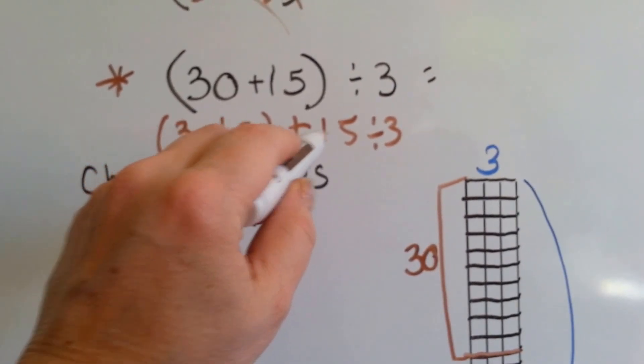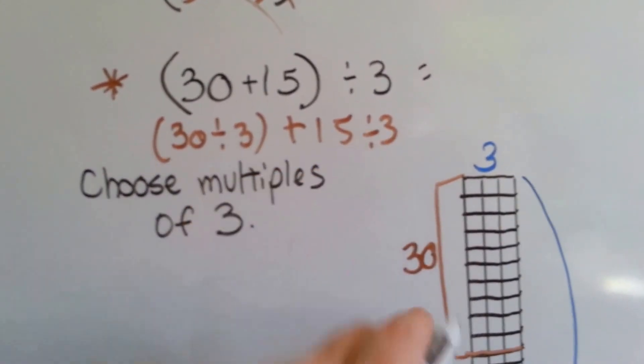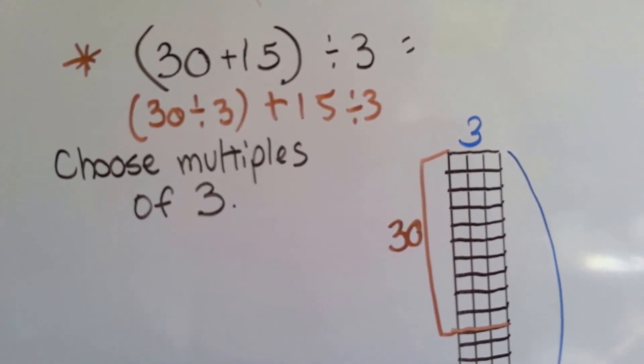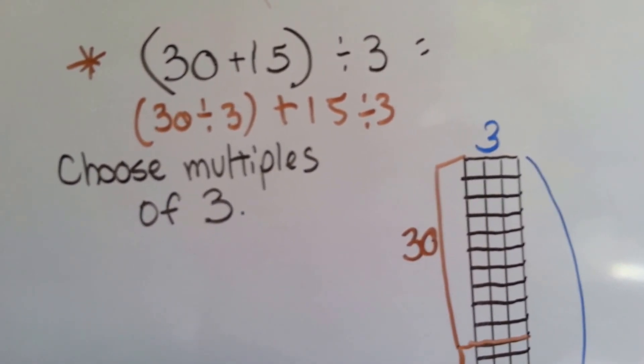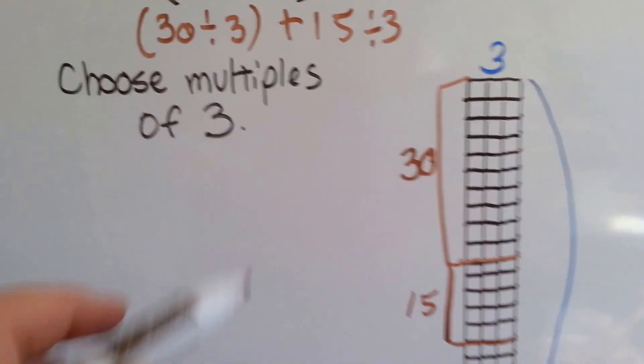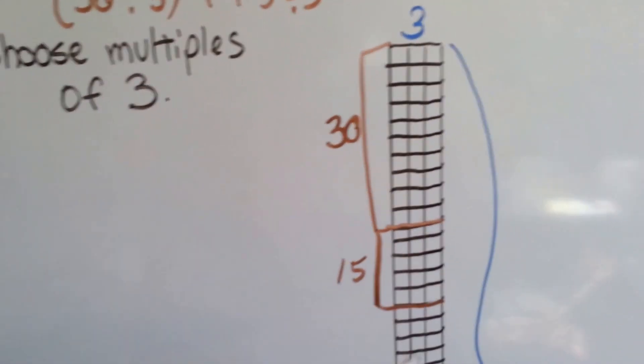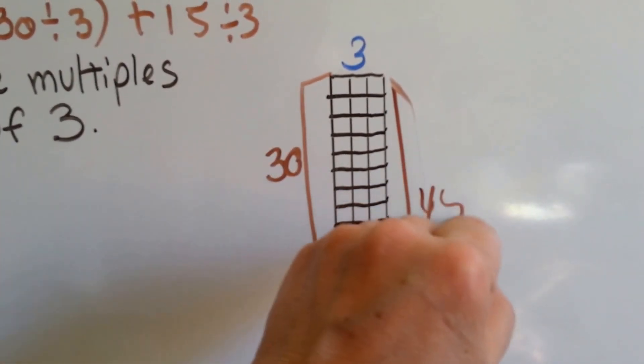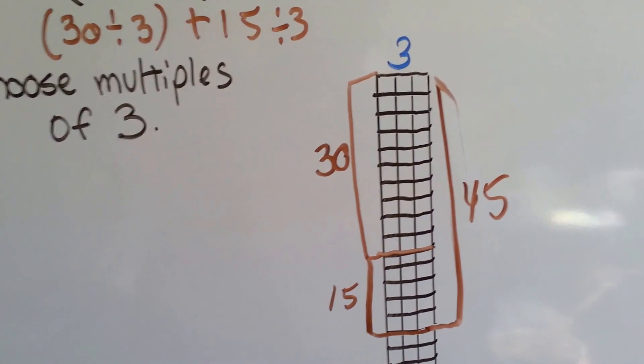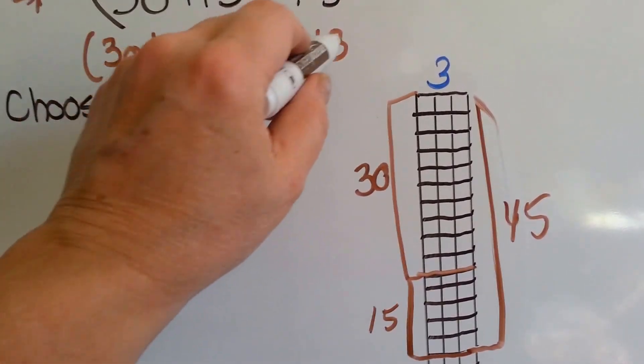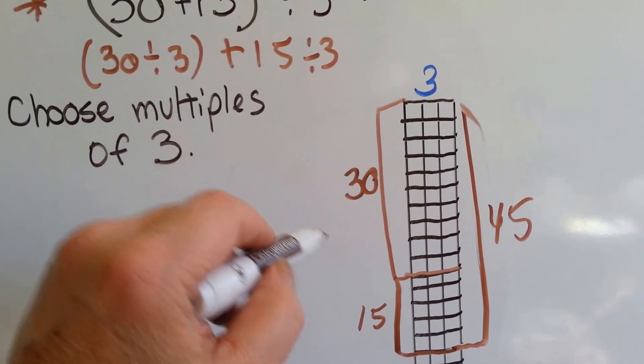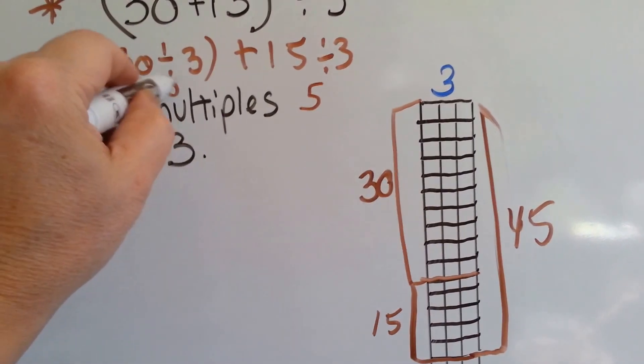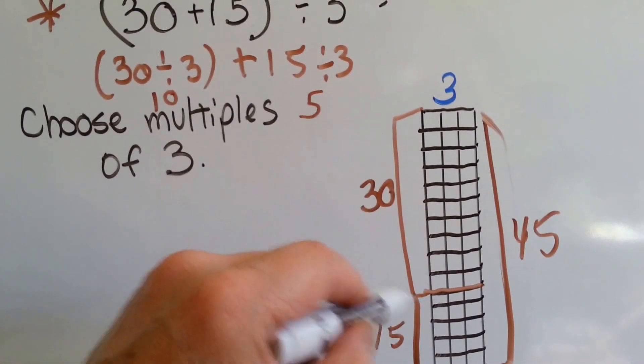And then 15. We need 15 divided by 3. So we got 3 here: 3, 6, 9, 12, 15. That's 15. So here's 30 and here's 15. So this section right here is 45. How many times can 3 go into 15? 5: 1, 2, 3, 4, 5. And 10 plus 5 is 15.